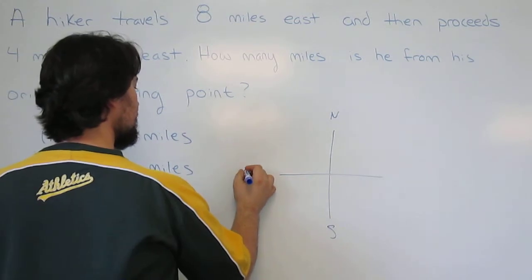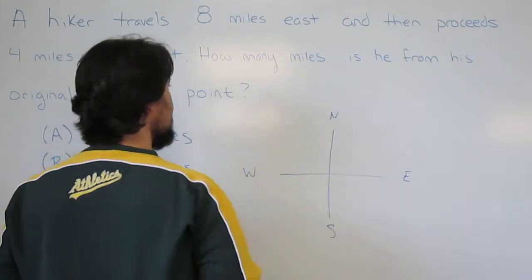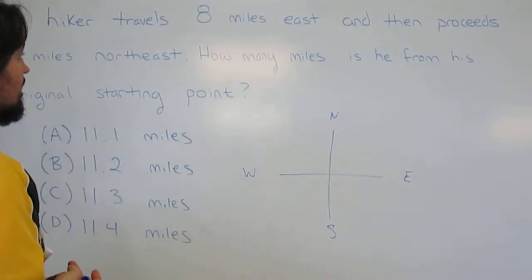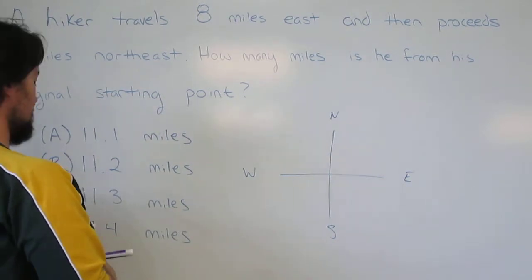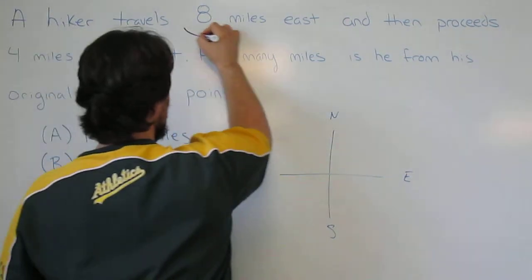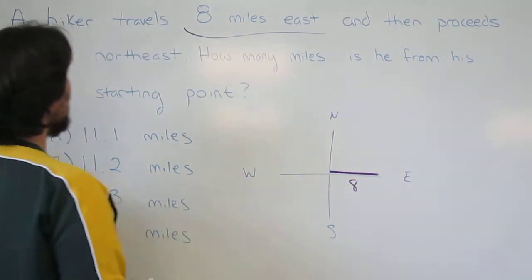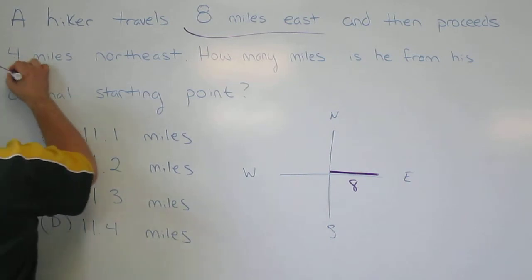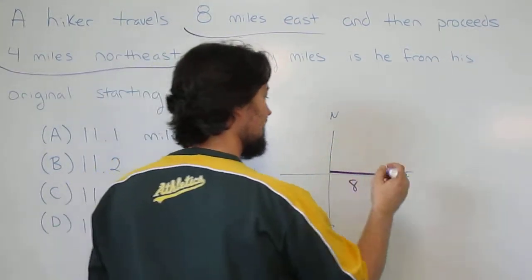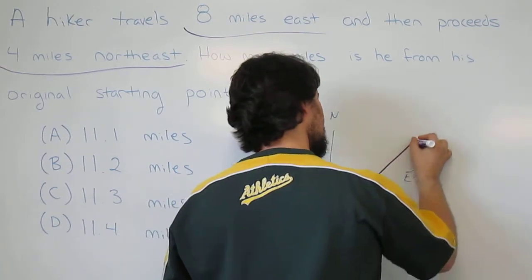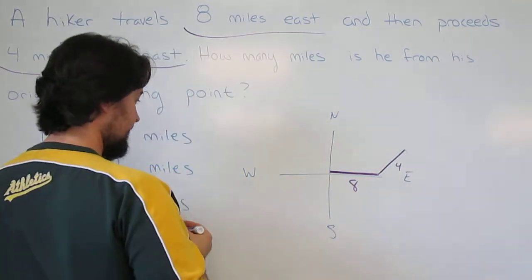Recall from the previous question which kind of question type this is — we need to draw out a couple things. We're going to go 8 miles east, followed by another 4 miles northeast. So we're going northeast — remember that 45-degree bisecting idea? Keeping it roughly to scale.